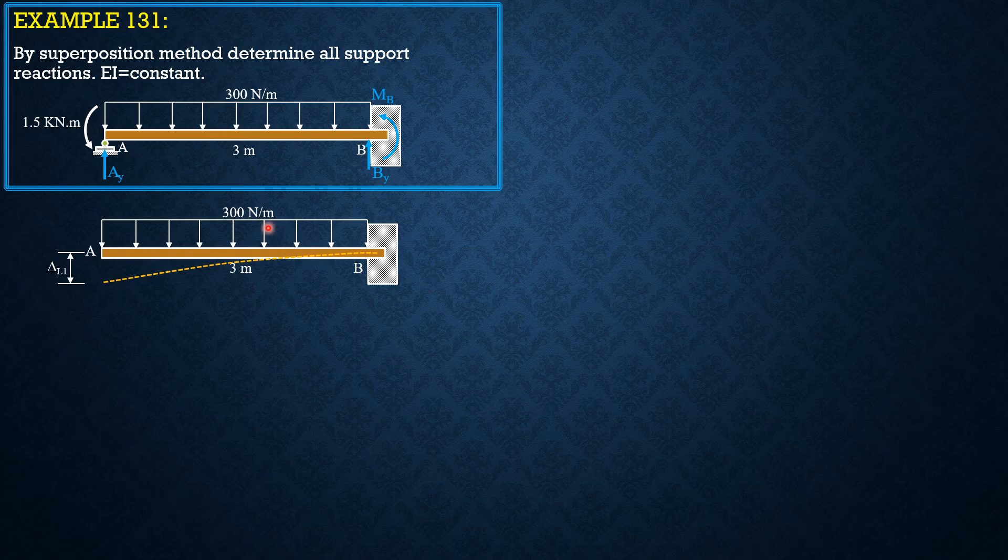Then we have the effect of the 300 Nm load. The moment at the wall is 300 times 3 times 1.5 and the deflection at A is delta L1, denoted as shown. So 300 times 3 times 1.5 is 1,350 Nm.